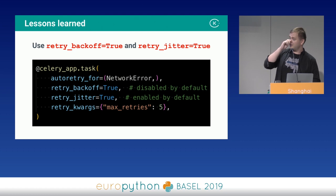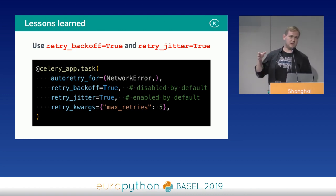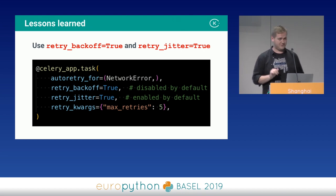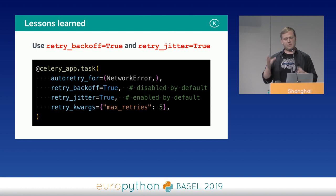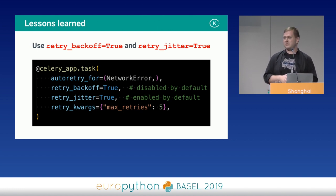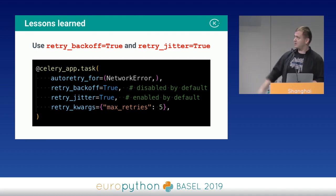With retry jitter, this is very useful when you have lots of the same tasks happening simultaneously. The jitter adds or subtracts a small amount of time from the backoff, so retries don't all happen at exactly the same time — you don't accidentally DDoS the other service. And always set a retry limit.